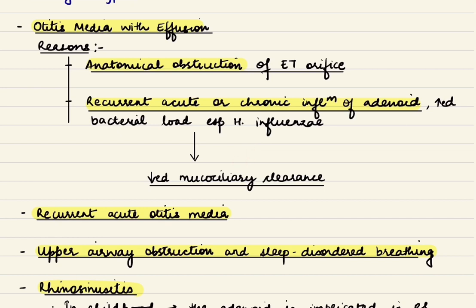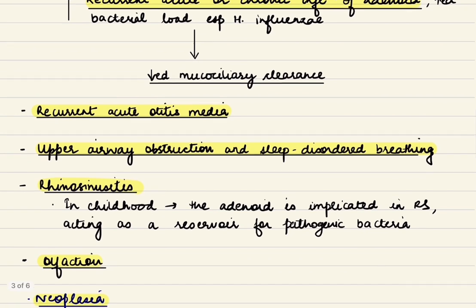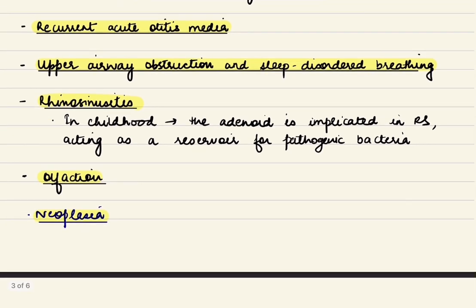Recurrent attacks of acute otitis media are also ear-related. Other manifestations include upper airway obstruction and sleep-disordered breathing due to mechanical obstruction from hypertrophy. In childhood, the adenoid is implicated in rhinosinusitis, acting as a reservoir for pathogenic bacteria, and has been implicated in reduced olfaction sensitivity, which improves after adenoidectomy. Rare instances of non-Hodgkin's lymphoma have also been reported, commonly seen with asymmetrical atypical enlargement of tonsils and lymph nodes in the absence of infection.